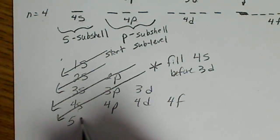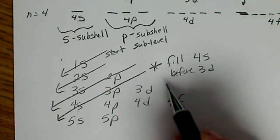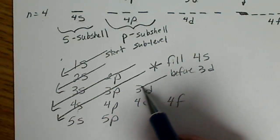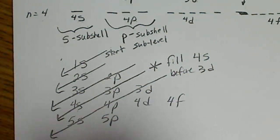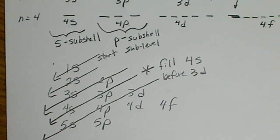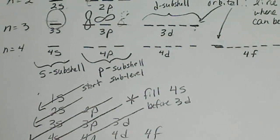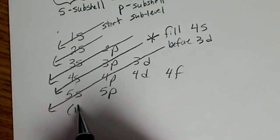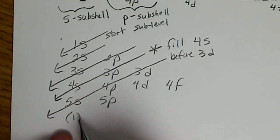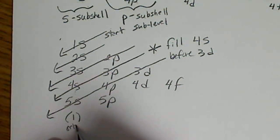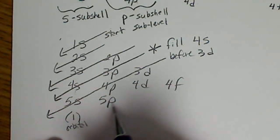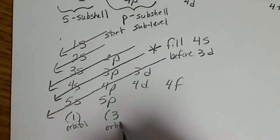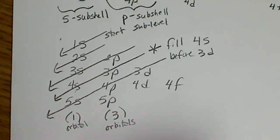And then we could continue on, 5S, 5P, so we would come back and fill the 3D, then the 4P, and the 5S. We could use this, but we've got to remember that there's always 1 orbital within this S sublevel. P means there are 3 orbitals.